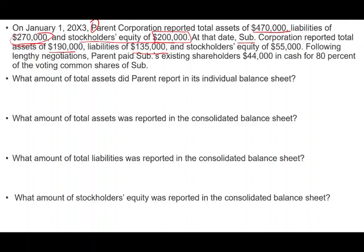Following lengthy negotiation, the parent company paid the sub-company shareholders $44,000 cash for 80% of the voting common shares of the sub. They paid $44,000 and bought 80% of the company.